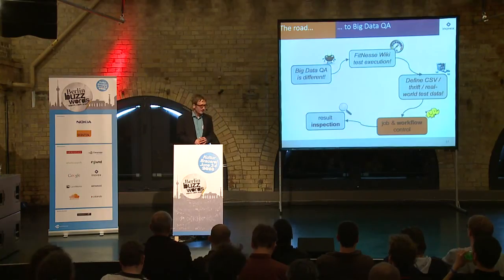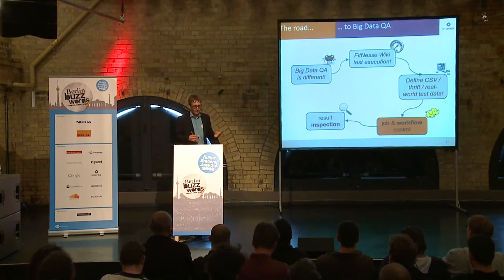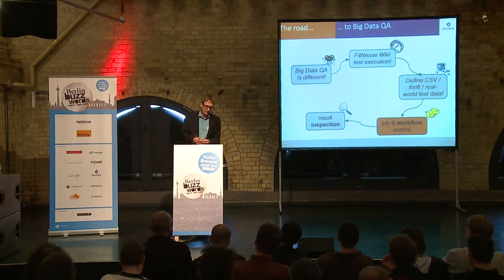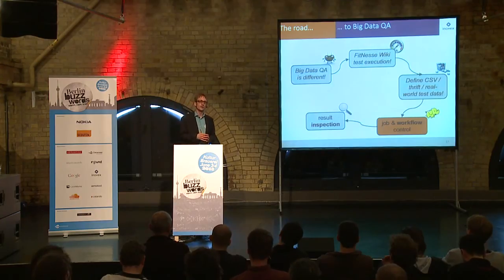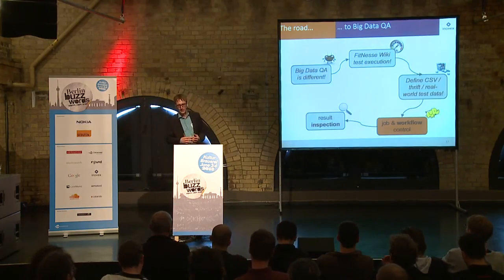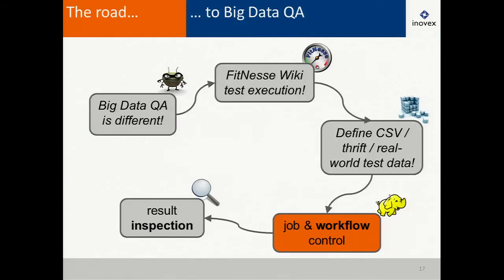To sum up this third part: using FitNesse, you can define CSV, Thrift, or real-world test data as the basis for actual jobs and test runs. Now, how do we actually run Hadoop jobs with FitNesse?